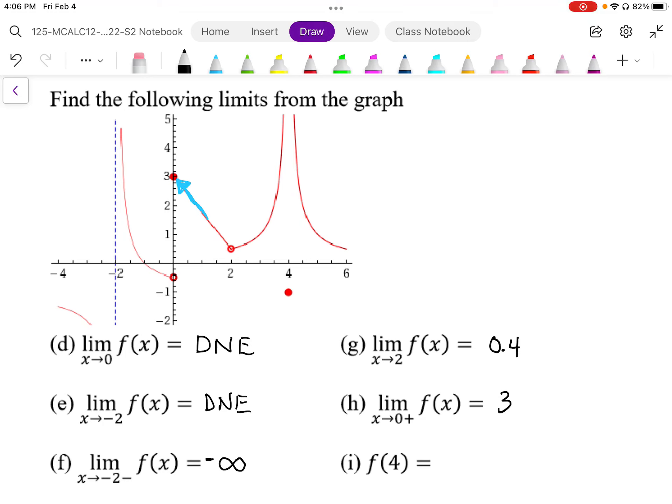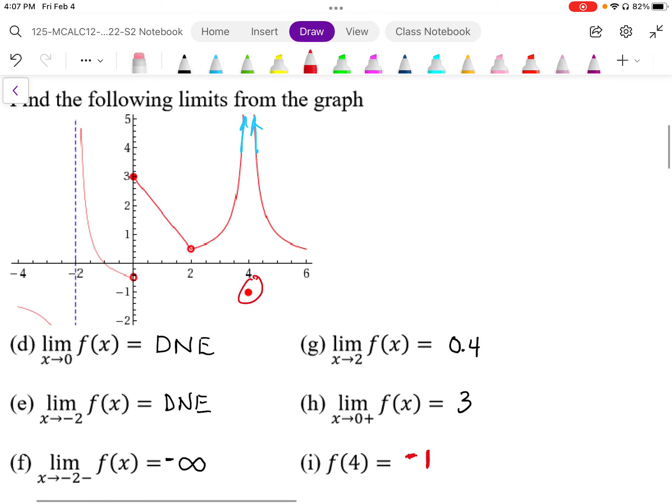So when we look at f of 4, although the limit does not exist as x approaches 4, actually the limit is infinite because it's approaching positive infinity, the value at 4 is different. The value at 4 is actually equal to negative 1. So the actual value is different than the limit. So what actually happens at 4 is different than the limit at 4.